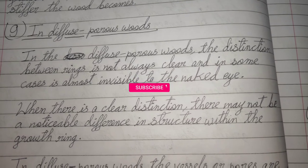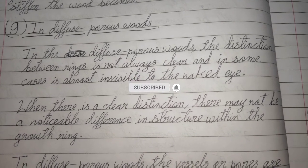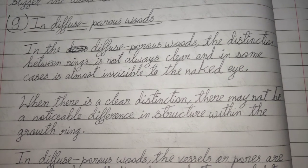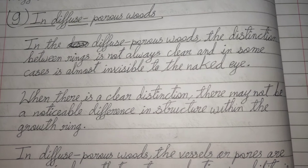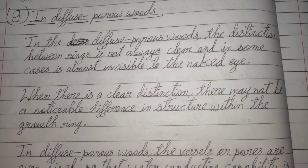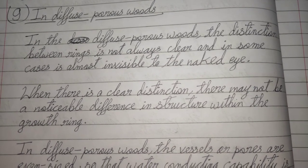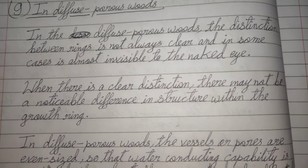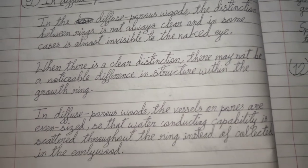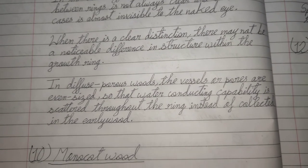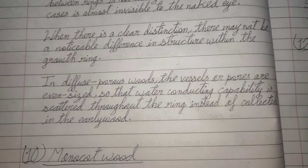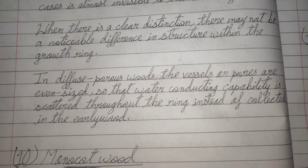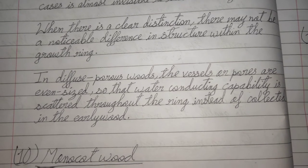In diffuse-porous woods, the distinction between rings is not always clear and in some cases is almost invisible to the naked eye. When there is a clear distinction, there may not be a noticeable difference in structure within the growth ring. In diffuse-porous woods, the vessels or pores are even-sized so that water-conducting capabilities are scattered throughout the ring instead of collected in the early wood.